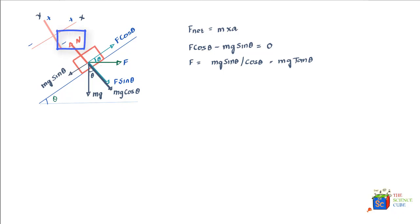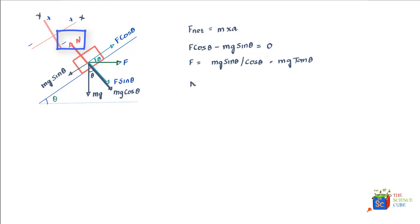For the second part of the problem — finding the normal reaction — let's look at the forces along the y-axis. mg cos theta and F sin theta act in the downward direction, while the normal reaction N acts in the upward direction. Since the mass is not moving along the y-axis, there is zero acceleration, so the right-hand side equals zero.